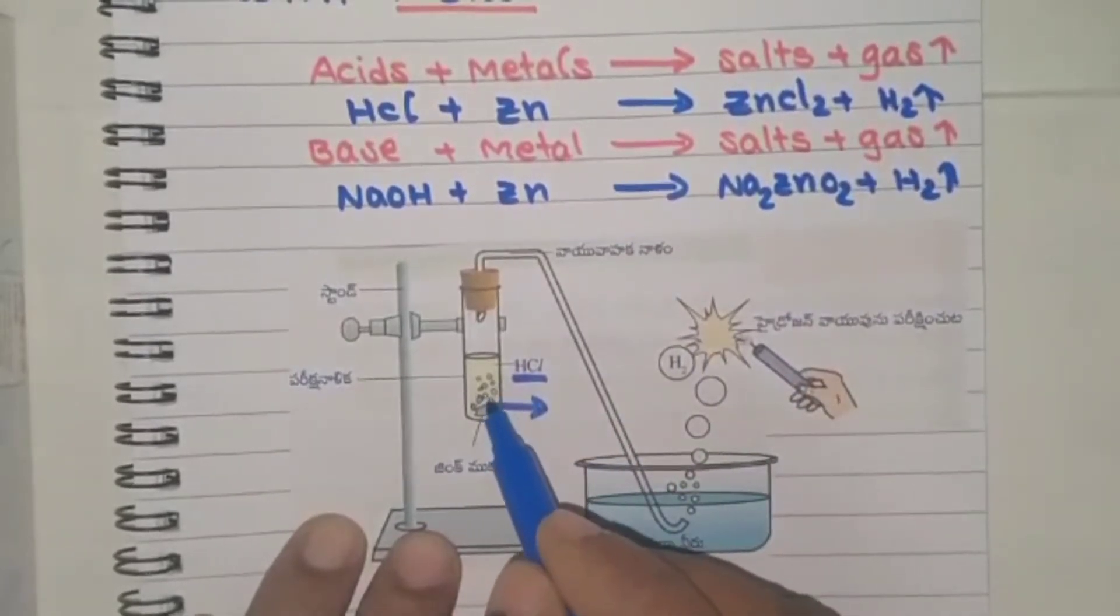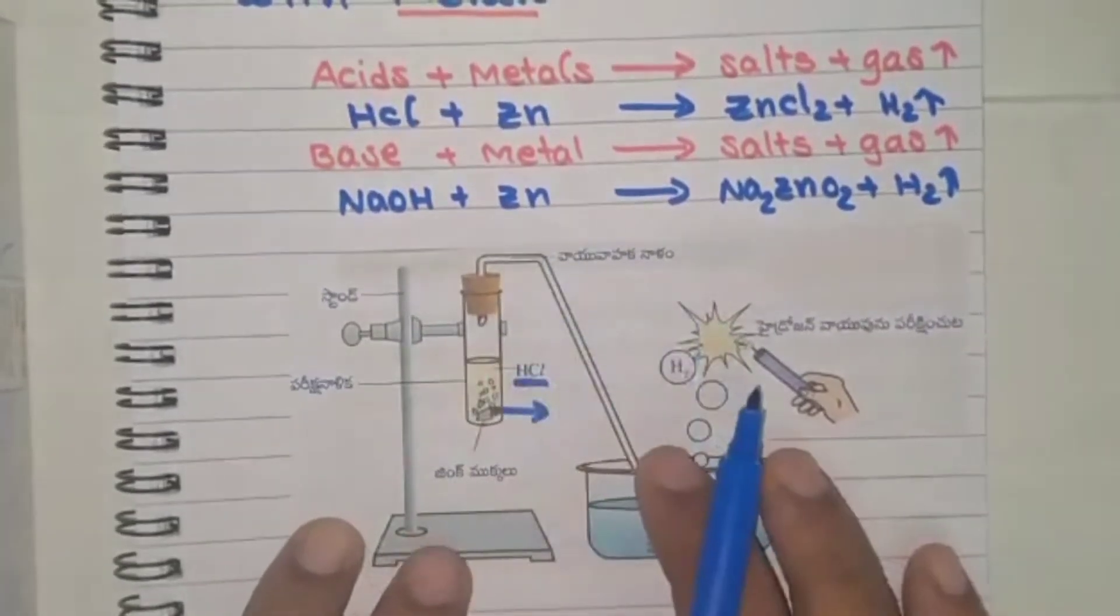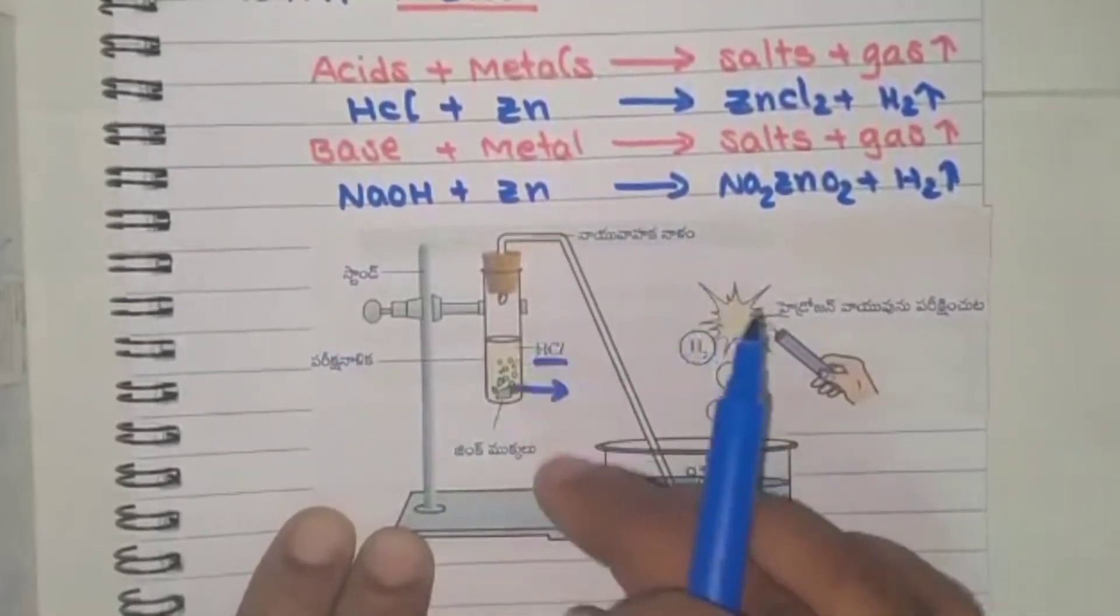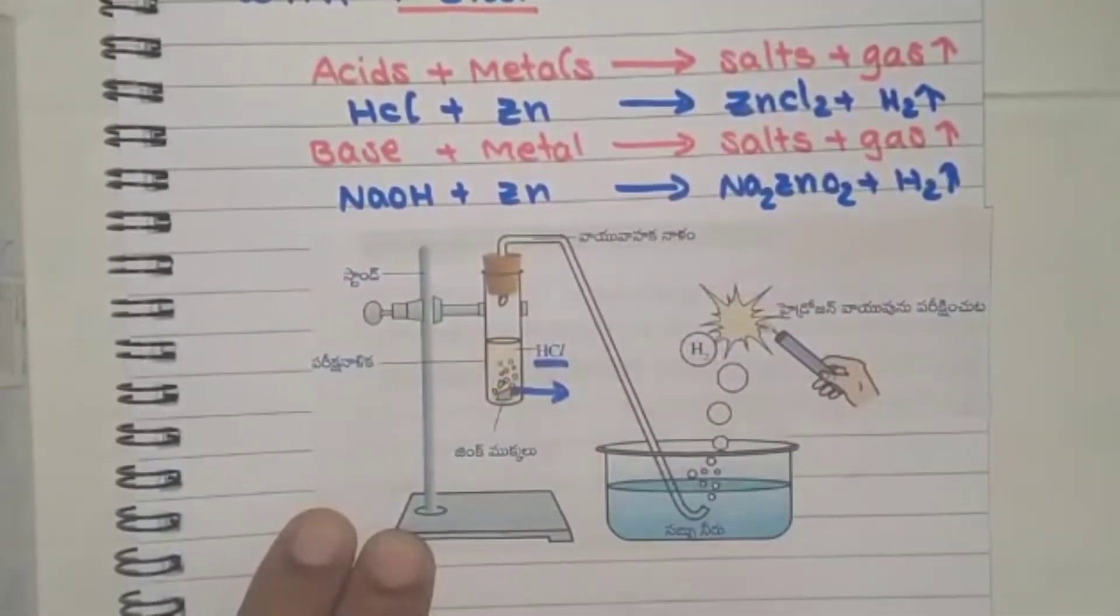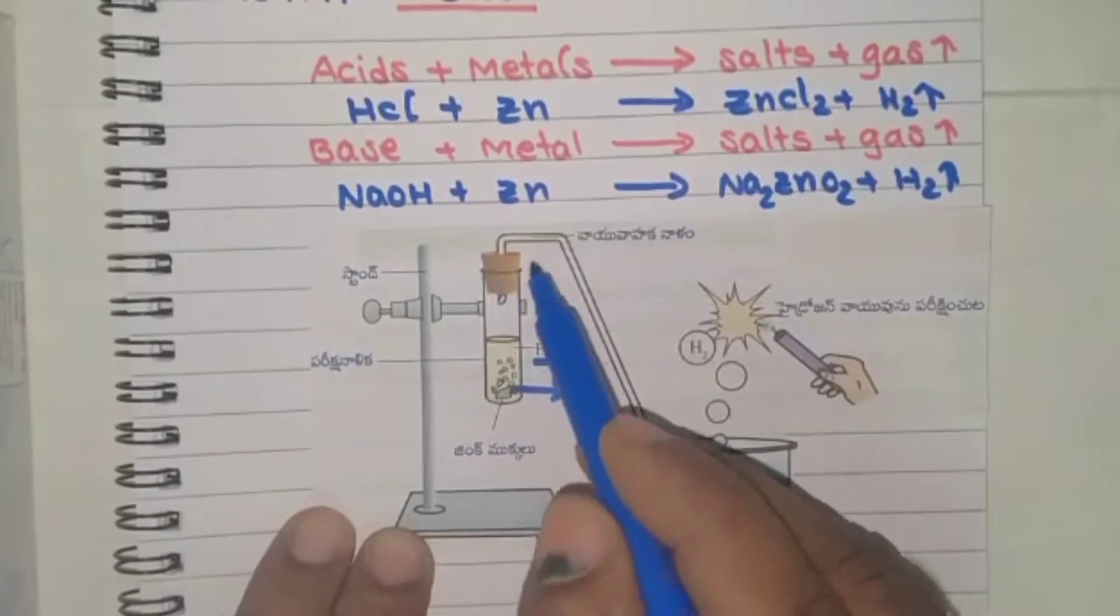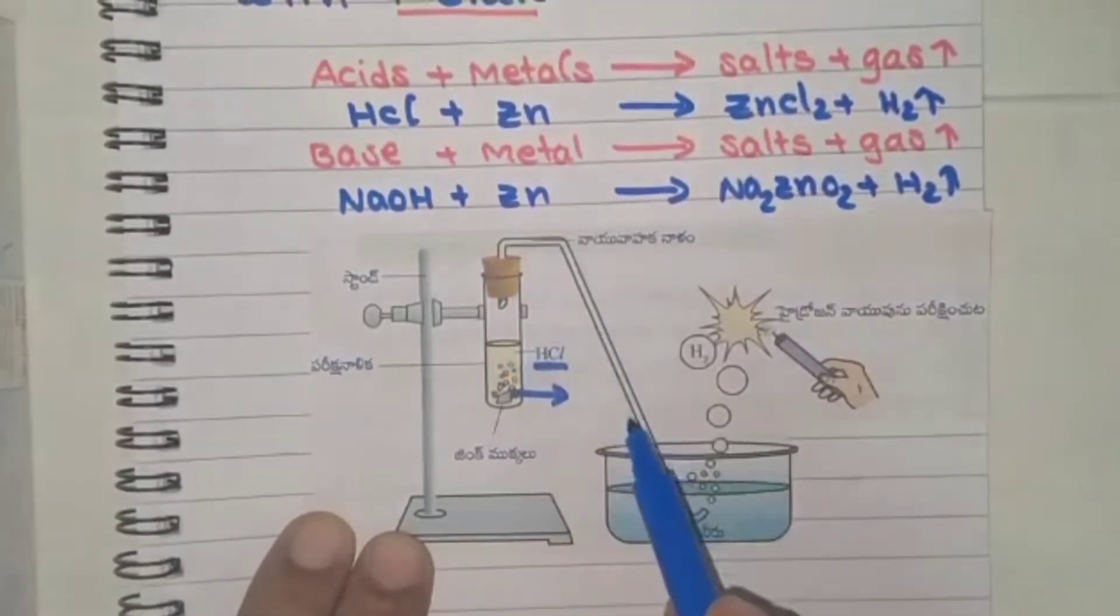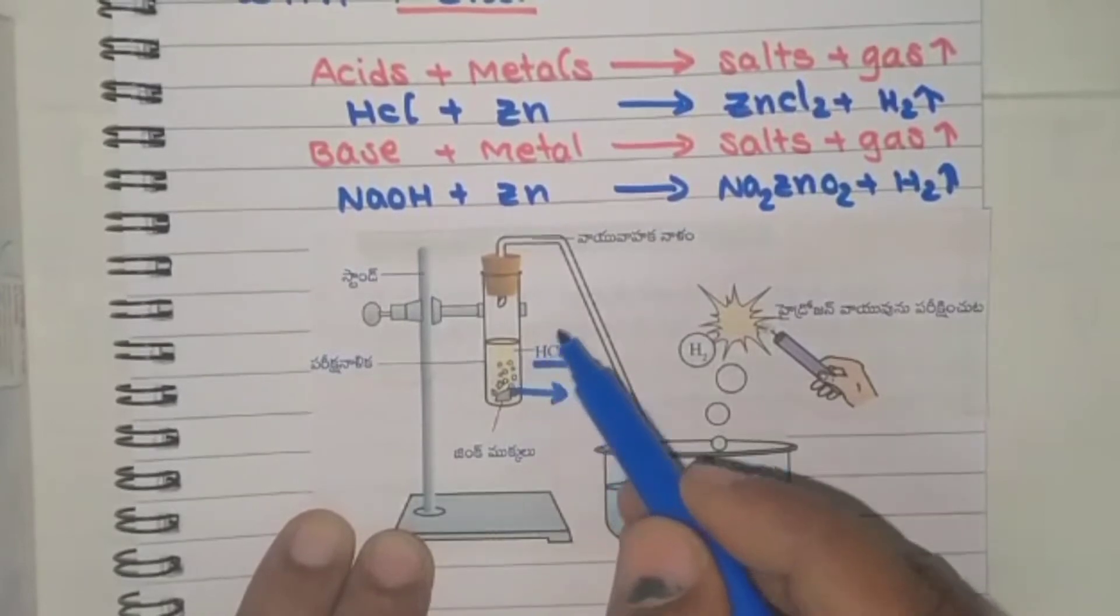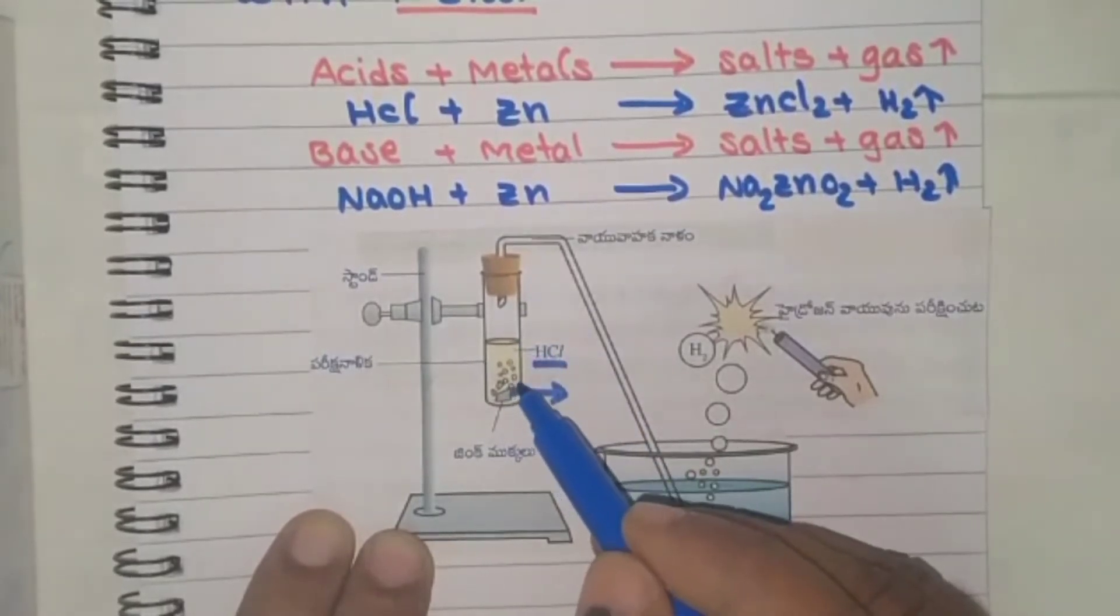Take some pieces of zinc. First we arrange the stand to support and handle the tube, arrange one rubber cork and attach it with the delivery tube. First you take hydrochloric acid and add some few pieces of zinc pieces.